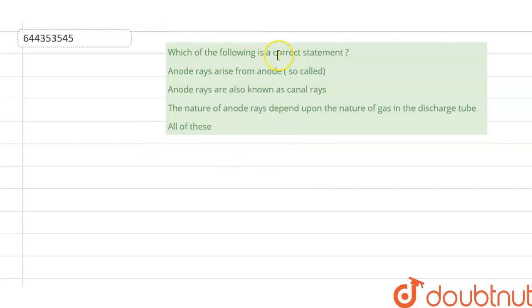The statements are: anode rays arise from anode (so called), anode rays are also known as canal rays, the nature of anode rays depend upon the nature of gas in the discharge tube, or all of these.